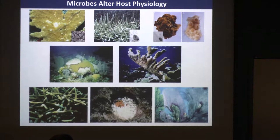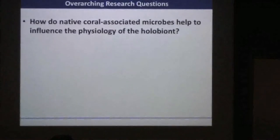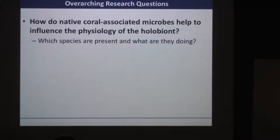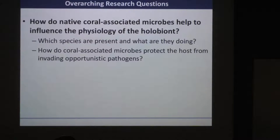Some of the questions I've been asking over the years are: how do native coral-associated microbes help to influence the physiology of the holobiont? What are the members normally associated with a healthy holobiont? What are they and what are they doing? And how are they altering the physiology of that holobiont? So what species are present and what are they doing?